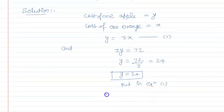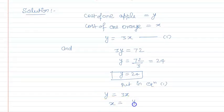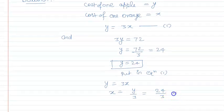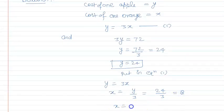So x = y/3 = 24/3 = 8. So x = 8, and x is the cost of 1 orange.